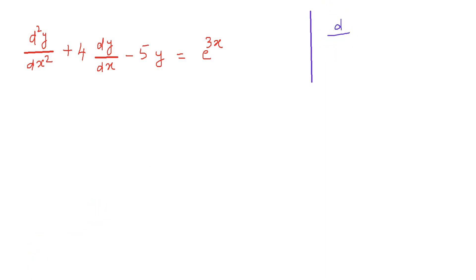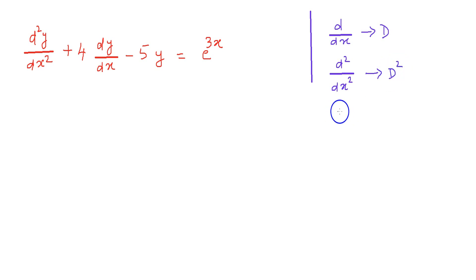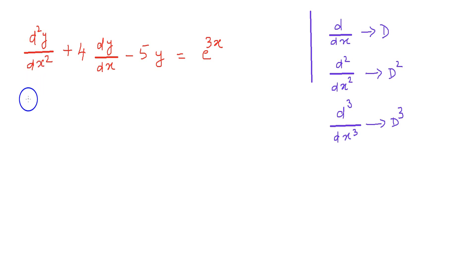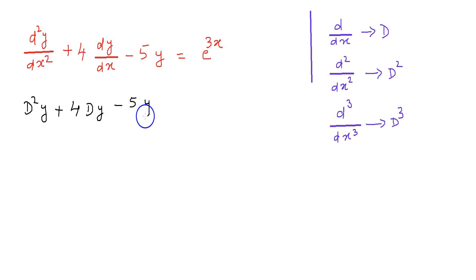Here onwards we are going to use D for d by dx, D squared for d squared by dx squared, and similarly D cubed for d cubed by dx cubed, and so on. Let us now rewrite the differential equation in terms of D. Then we have D squared y plus 4D y minus 5y equal to e raised to 3x.